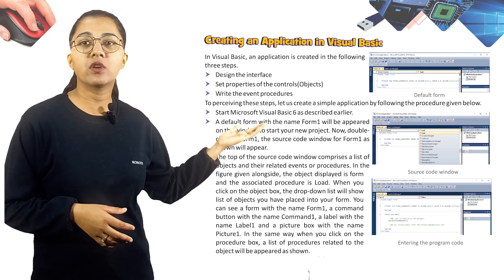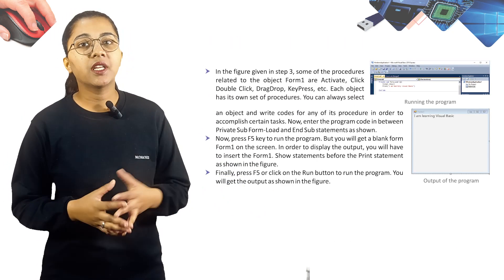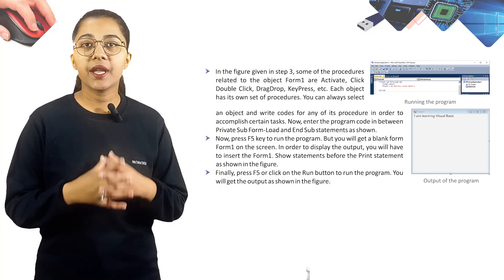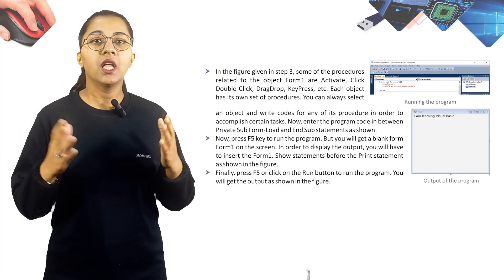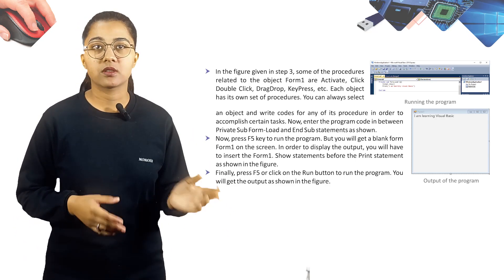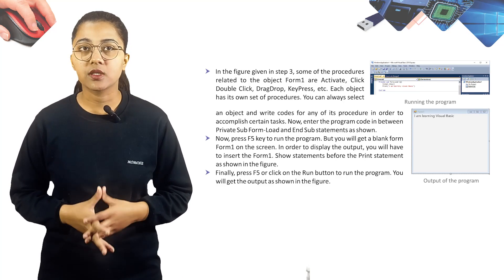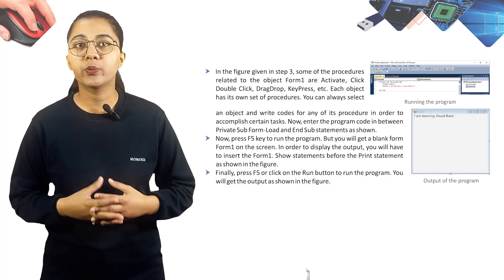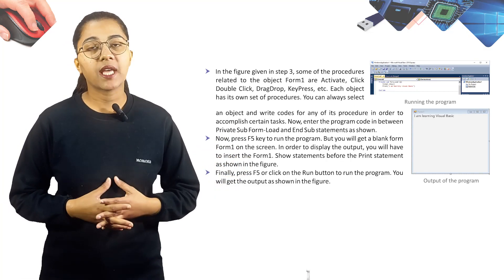When you click on the Procedure Box, a list of procedures related to the object appears. Some procedures related to Form1 include Click, Double Click, Drag Drop, Key Press, etc. Each object has its own set of procedures. You can always select an object and write code for any of its procedures to accomplish certain tasks.